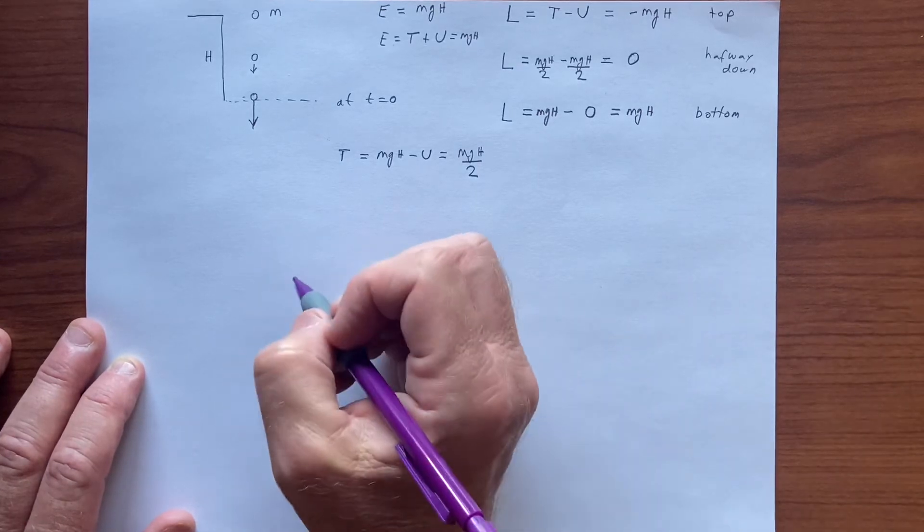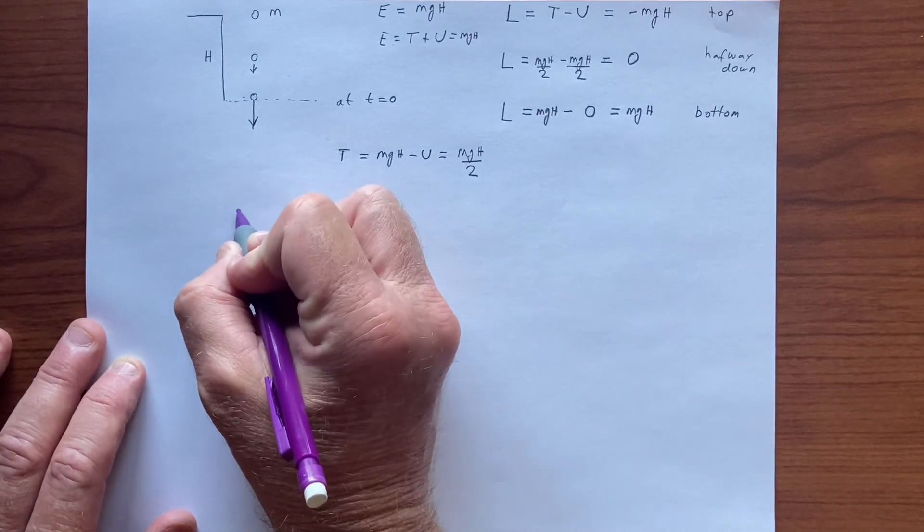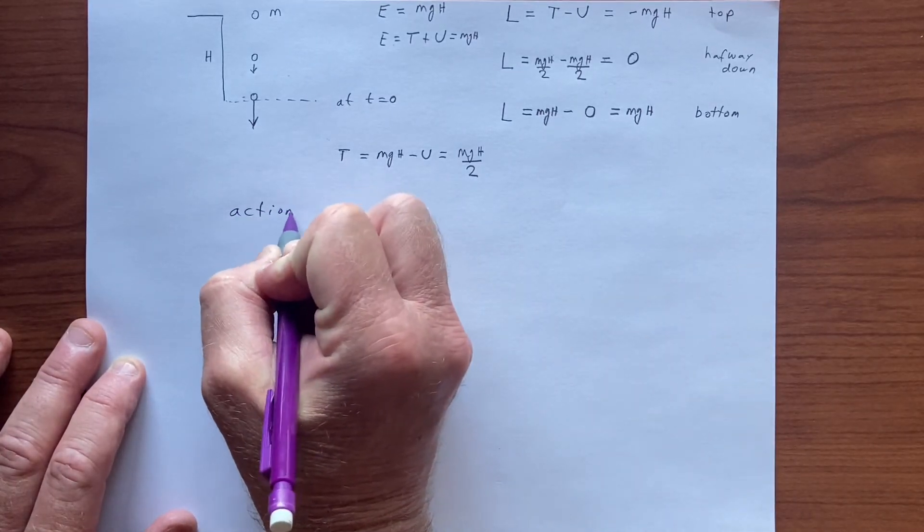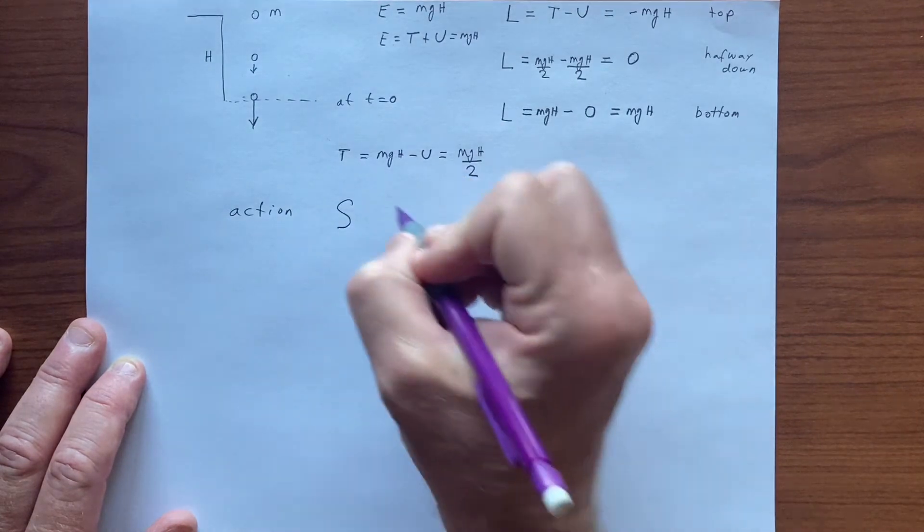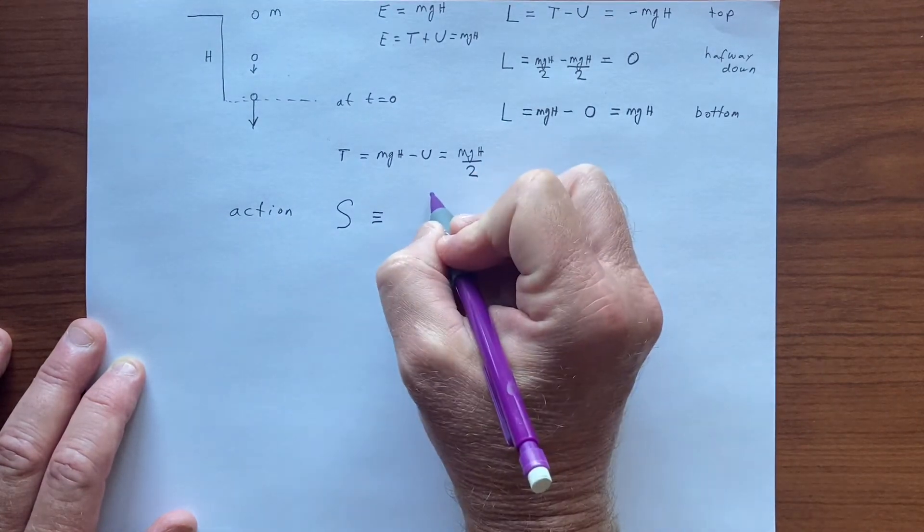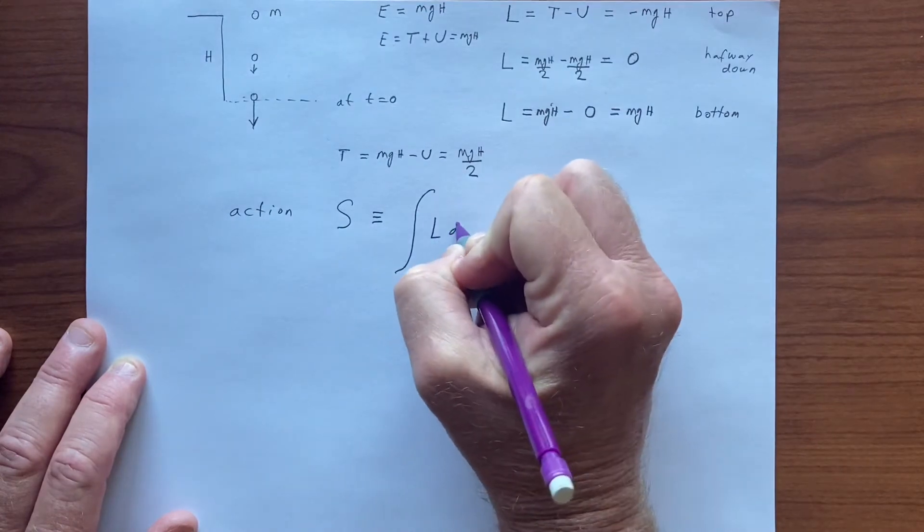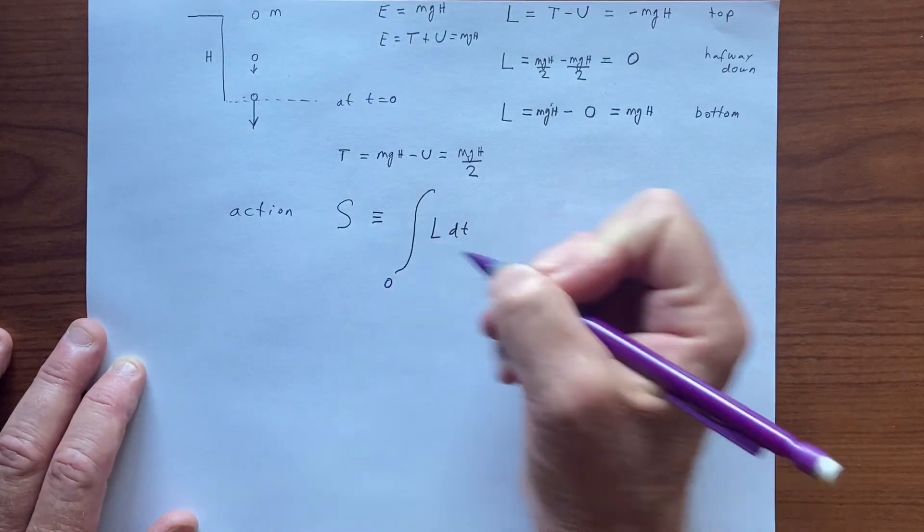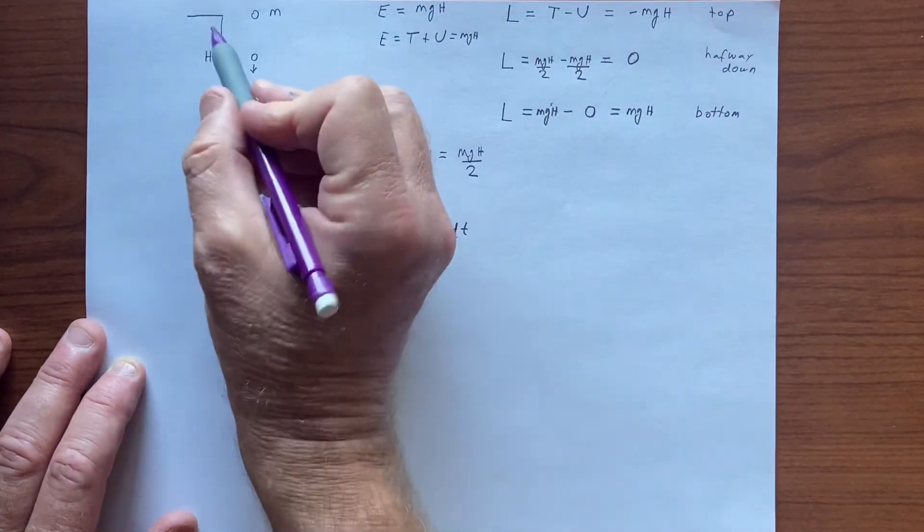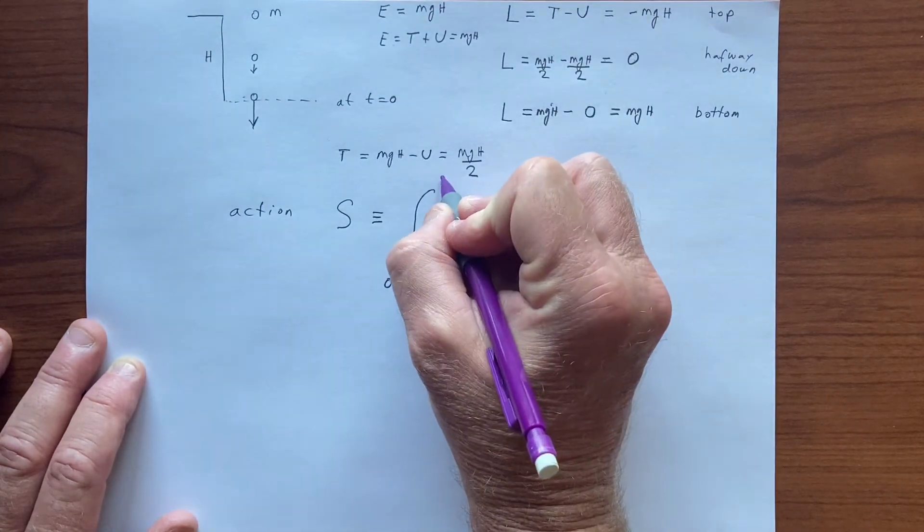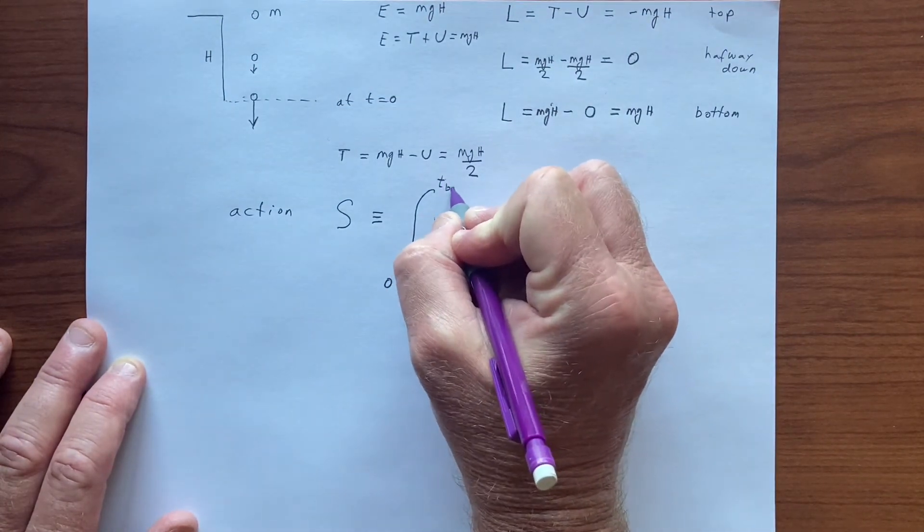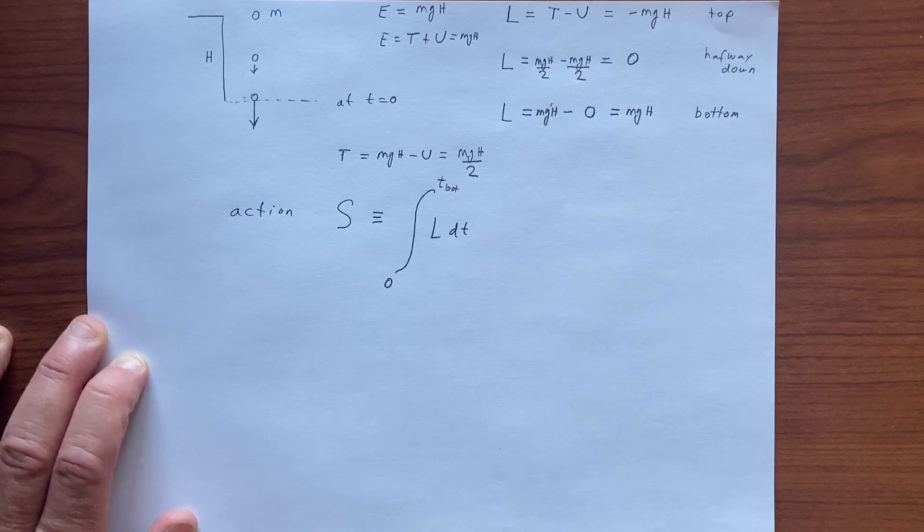But let's now construct what we call the action, which is indicated as S, and that's the integral of this quantity over time. So in this case, we're from some initial time t equals zero to some final time t bottom, something like that.